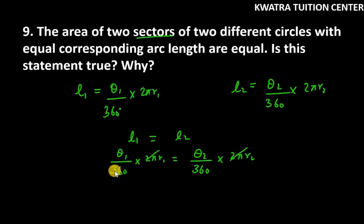2π cancels, 360 cancels. So you are left with θ₁r₁ equals θ₂r₂. Because here we have not given that theta is same or radius is same for both circles. So nothing is the same.